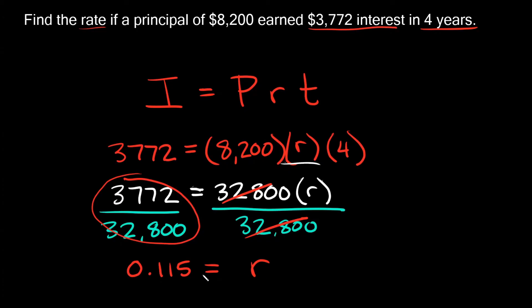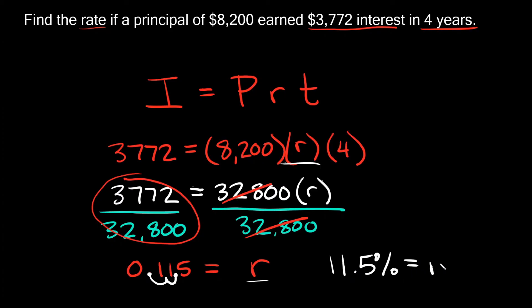So R equals 0.115 — but is that your final answer? No, because the rate is a percentage and this is a decimal. To convert a decimal to a percentage, move the decimal two places to the right. So 0.115 becomes 11.5, and that's a percent. So R is equal to 11.5%, and that's your answer.